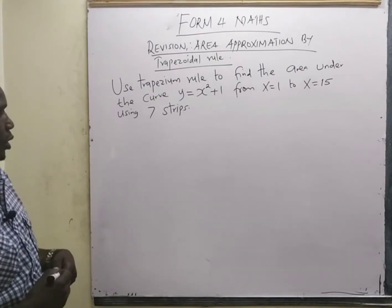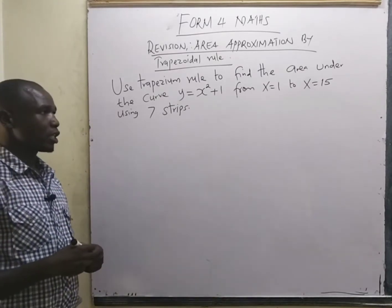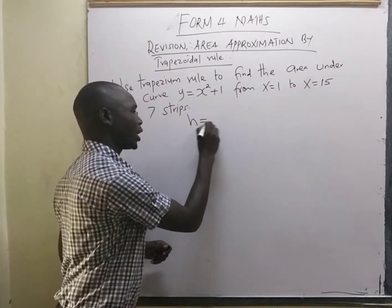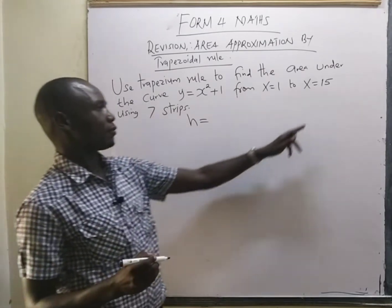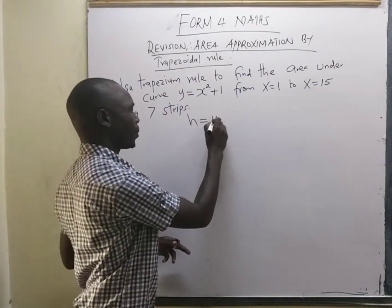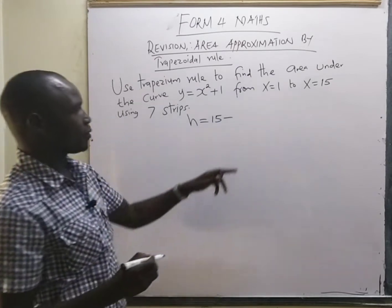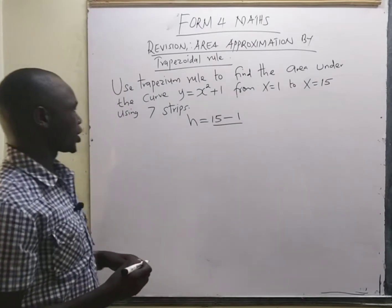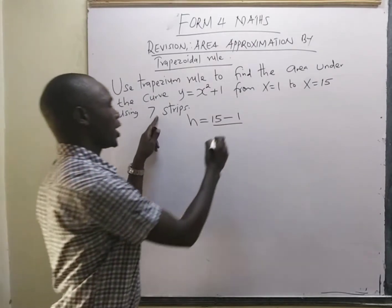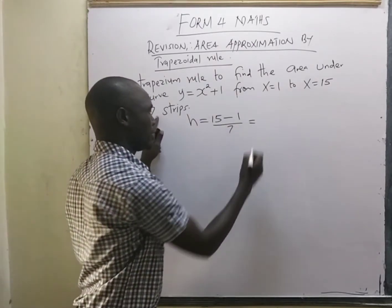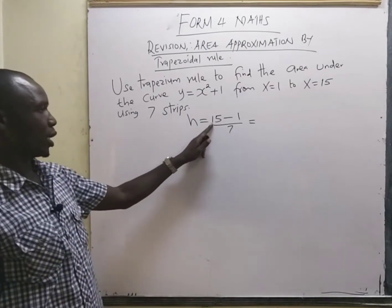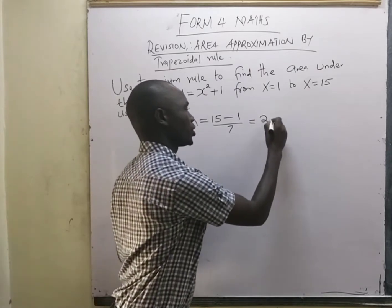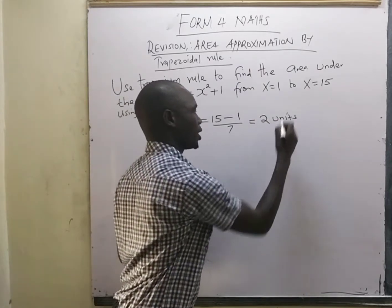Under the trapezium rule, the first thing a student is supposed to do is calculate the height. To get the height, we take the maximum value of x, which is 15, minus the minimum value of x, which is 1, and divide by the number of strips — in this case 7. 15 minus 1 gives 14; 14 divided by 7 gives 2 units. That is our height.